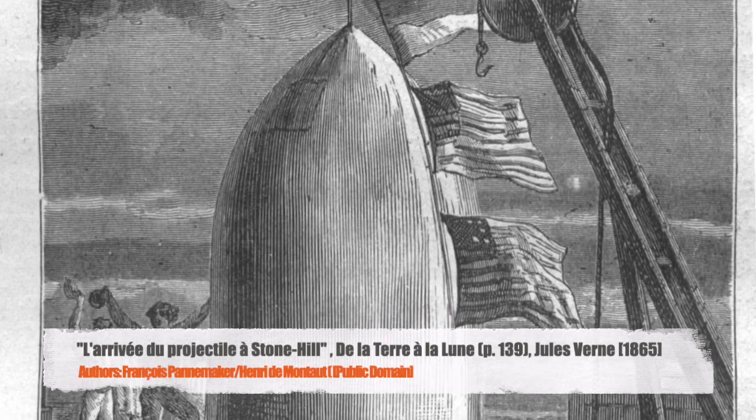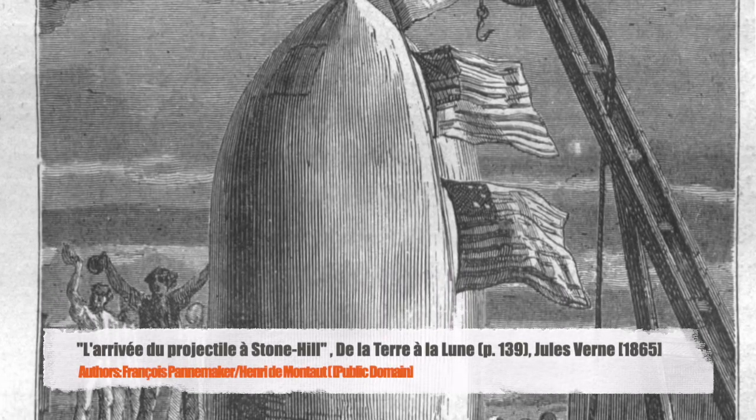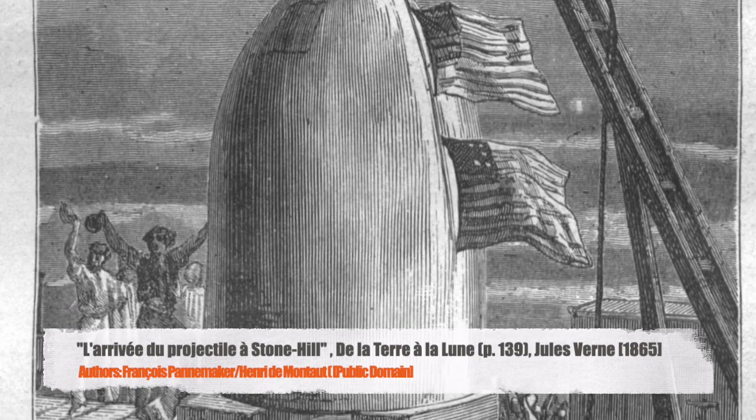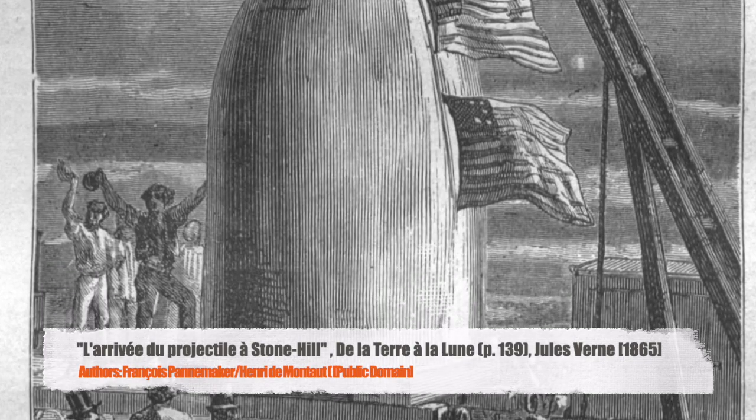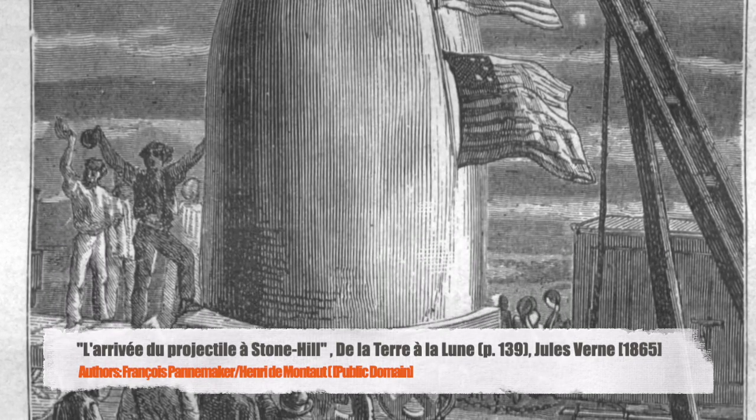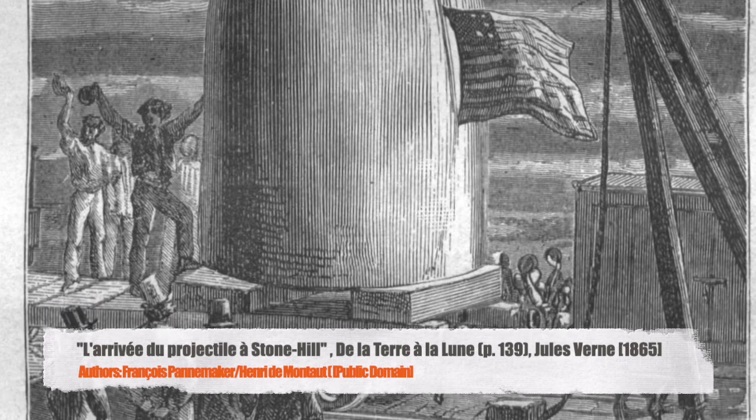In 1865, Jules Verne proposed in his book De la Terre à la Lune, From the Earth to the Moon, that if we would shoot a projectile from a cannon with sufficient initial speed, it would actually go all the way to the moon and never fall down.